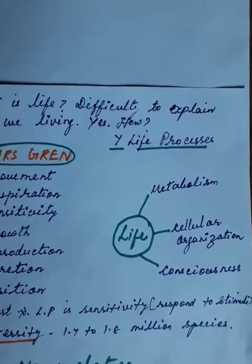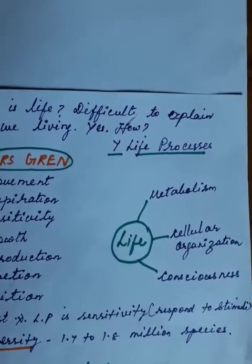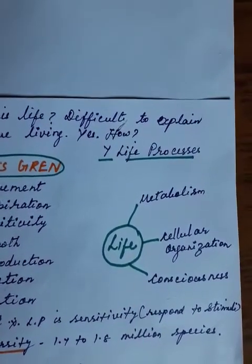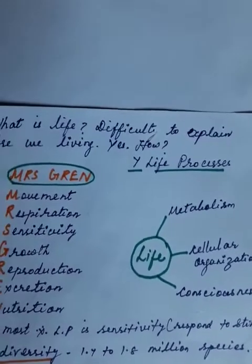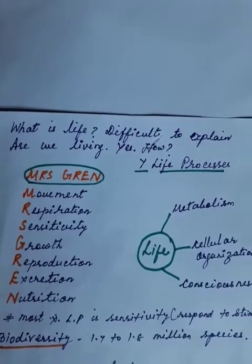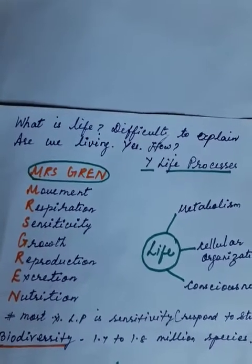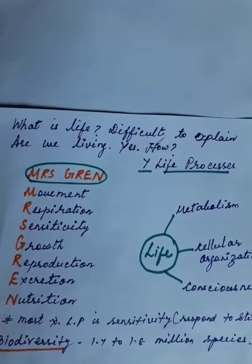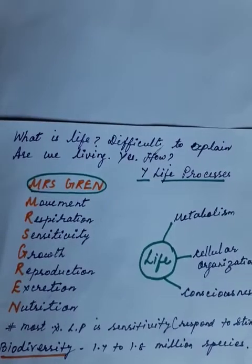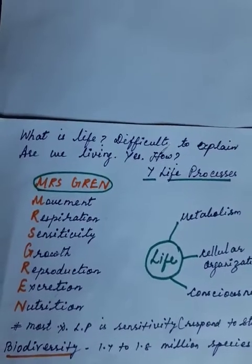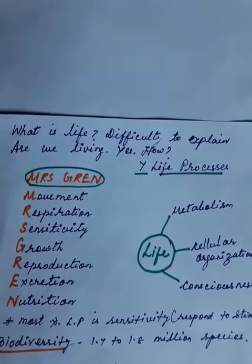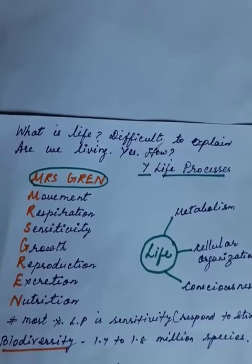The next point is consciousness — meaning awareness about the environment. In the world there is a diversity of living organisms. It is very difficult to identify and remember all their names — that is known as biodiversity. The diversity of living organisms: 1.7 to 1.8 million species are found in the world.